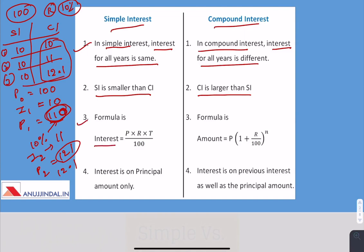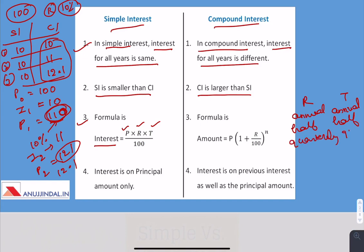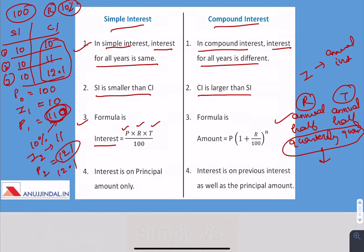Now let us look at the formulas. The formula for simple interest is: SI = (Principal × Rate × Time) / 100. You must ensure that R and T are in the same time period — if R is annual, T should also be in annual terms; if R is half-yearly, T should be in half-yearly terms; if R is quarterly, T should also be in quarterly terms. The interest calculated will correspond to whichever time period R and T are expressed in.